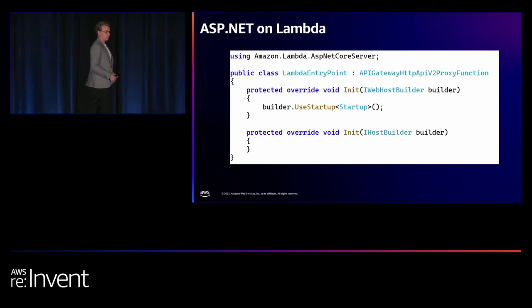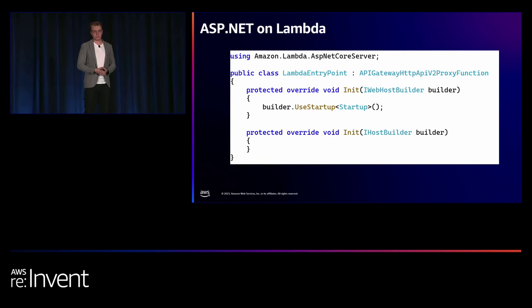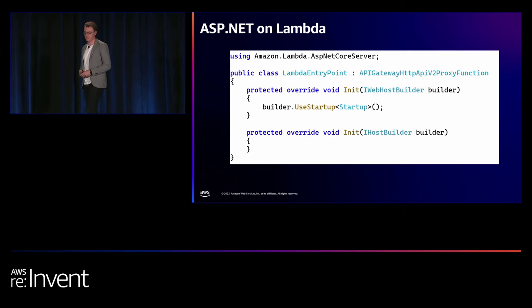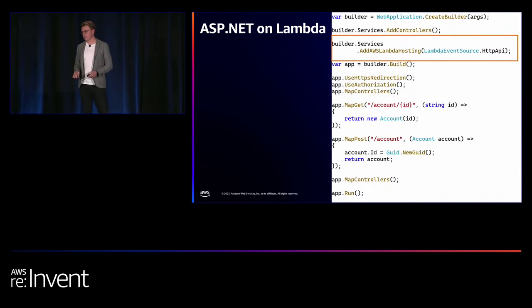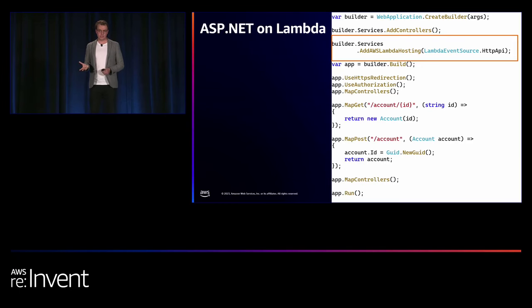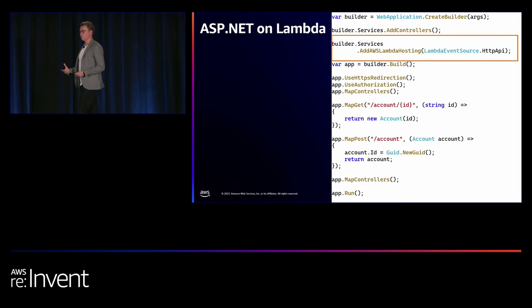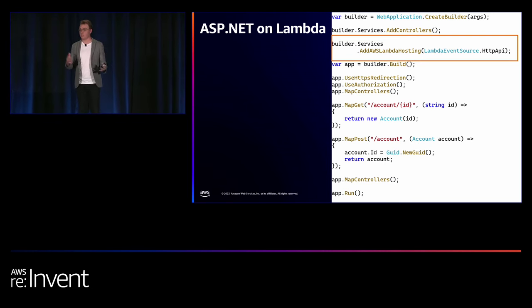These base classes also allow you to override an Init method where you can set your startup code, using the exact same startup class you already have in your ASP.NET application. If you're using minimal APIs, this gets even simpler: in your program.cs file, you simply add builder.Services.AddAWSLambdaHosting, specifying the enum for what you're putting in front of Lambda. These libraries are context-aware, so the same ASP.NET application can run locally, in a container, and on Lambda — it understands when it's running on Lambda and starts up accordingly.